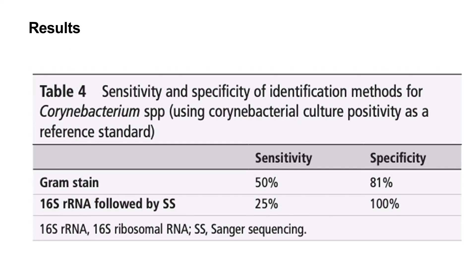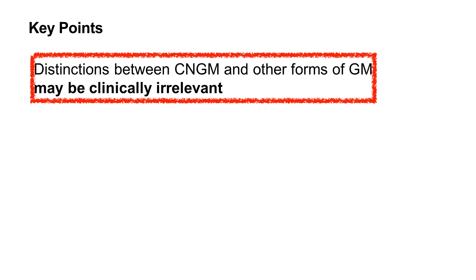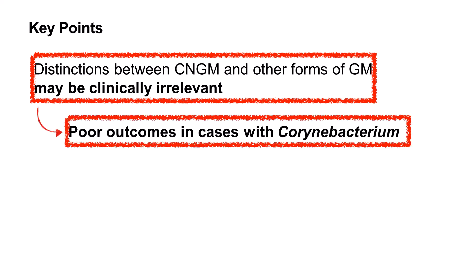This relates to the second aim: to determine the sensitivity and specificity of gram stain and 16S ribosomal RNA PCR followed by Sanger sequencing, compared to the gold standard of microbial culture. Yang et al. found that PCR followed by sequencing outperformed gram staining in terms of specificity. However, the low sensitivity of this method makes it a poor candidate for routine diagnosis, and the sensitivity of gram stain was also found to be fairly low. Overall, distinctions between CNGM and other forms of granulomatous mastitis may be clinically irrelevant, as poor outcomes were associated with coronibacterial infection regardless of histological subtype.